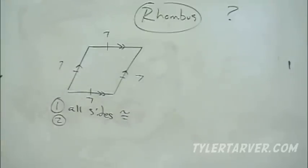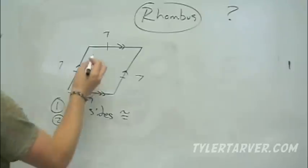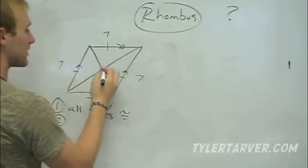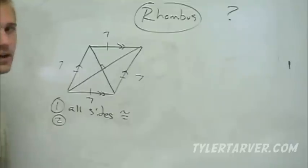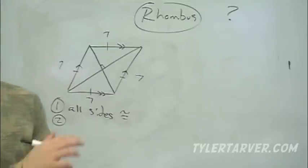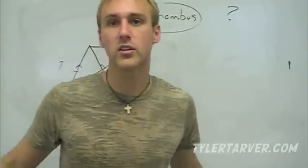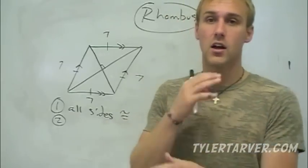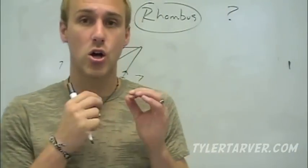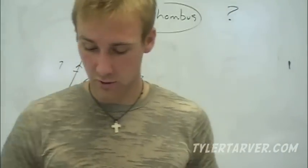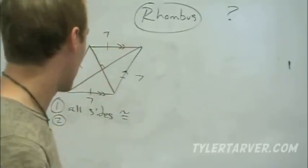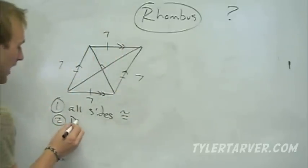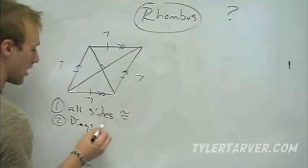Second thing: the diagonals, when they cross, always make a 90-degree angle — they're always perpendicular. So if we're working on a coordinate plane and need to find out if a shape is a rhombus, those diagonals are perpendicular — slopes would switch sign and flip. So far we know that all sides are congruent in a rhombus and the diagonals are perpendicular.